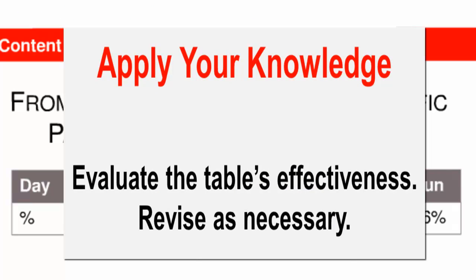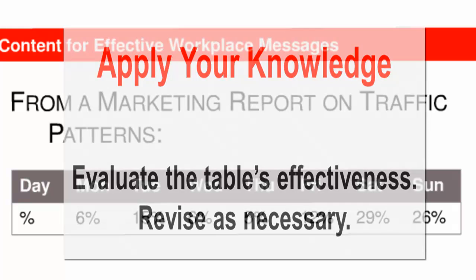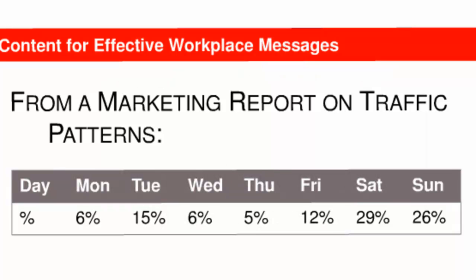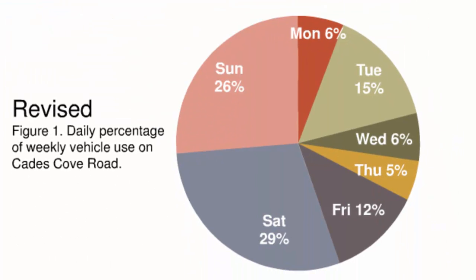It's time to check your understanding of developing graphics by reviewing one you haven't seen before. The question asks that you determine if the table is effective and then revise as needed. Pause the recording to review the table from a marketing report on traffic patterns. Think about the effectiveness of the type of graphic for the content and its effectiveness for a workplace audience. If you need to, go back to the table shown earlier in this tutorial about different graphic types. While it might be important to readers to locate precise values in this situation, I believe the revised version providing those values within a pie chart is more effective. The pie chart provides a more visual or global sense of the shape of the data. Note also that the revised version has a caption with a label that can be referred to within the prose of the report.